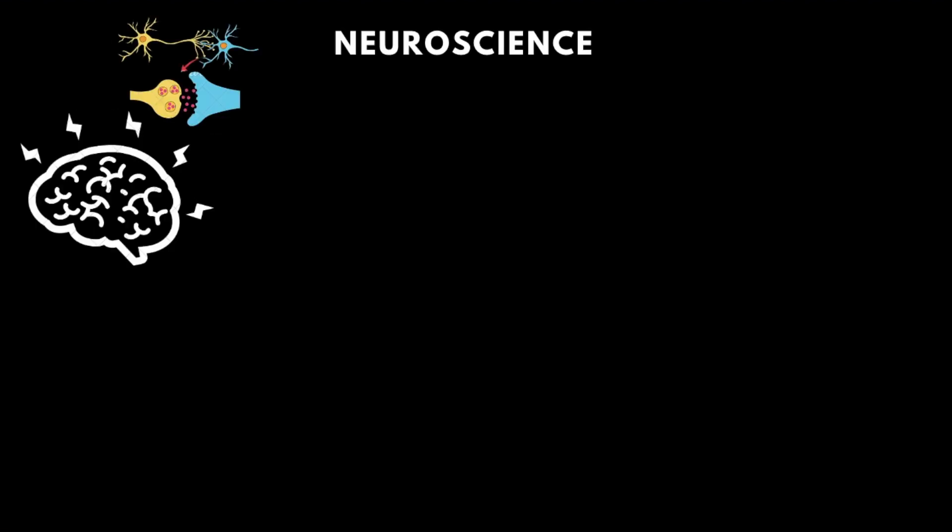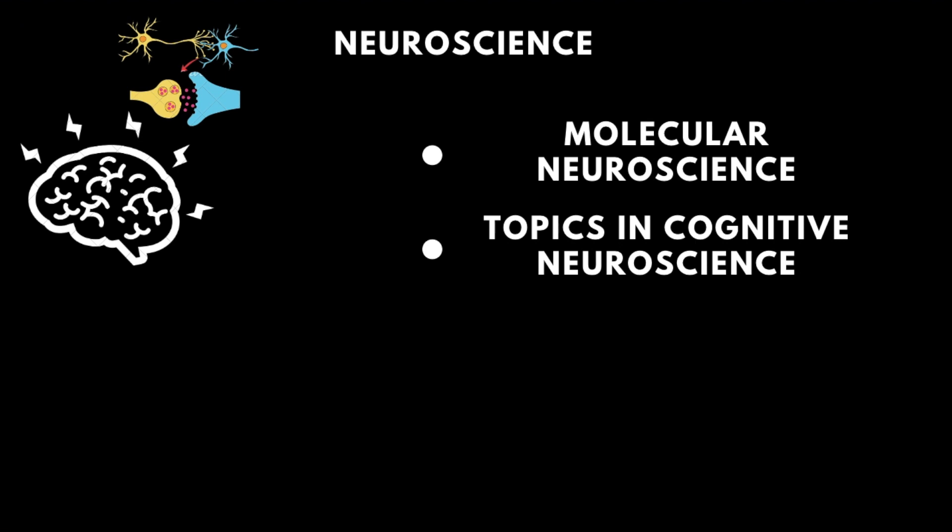Furthermore, a good grasp and understanding of neuroscience is crucial. Remember, computational neuroscience is a subfield of neuroscience. Therefore, knowing your basics in biology and neuroscience underlying the brain is absolutely crucial. We specifically recommend learning more about molecular neuroscience, topics in cognitive neuroscience and cognition and cognitive psychology more broadly.